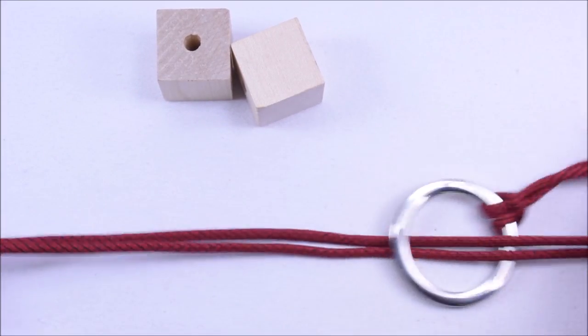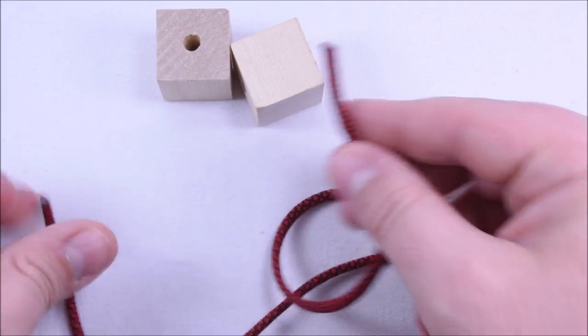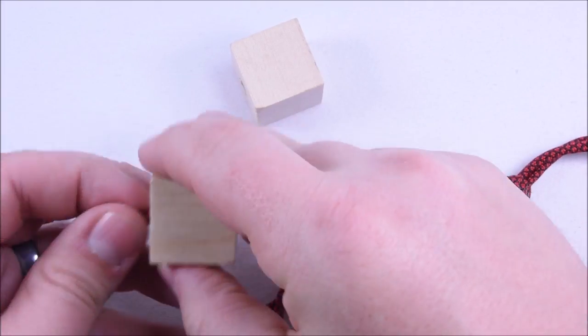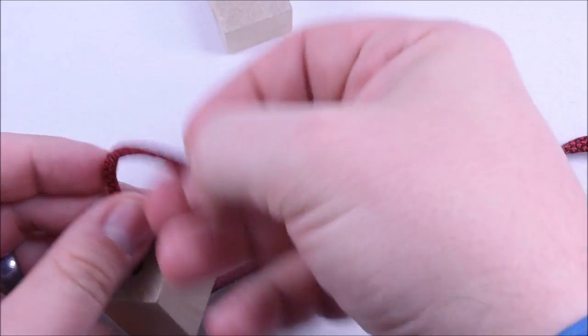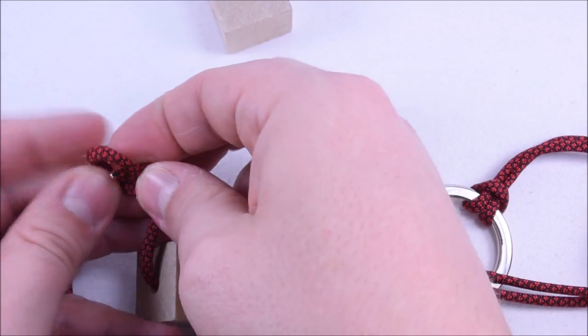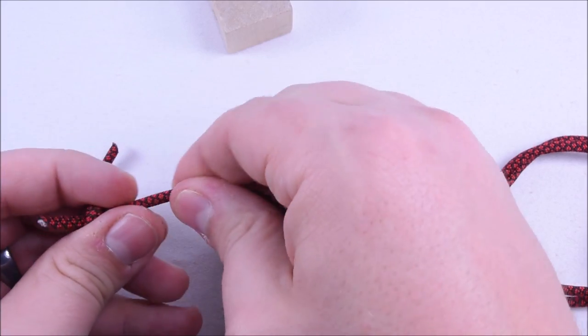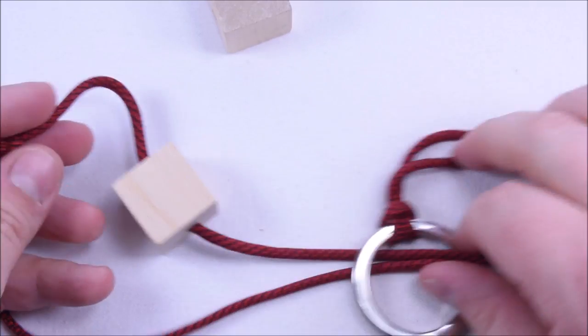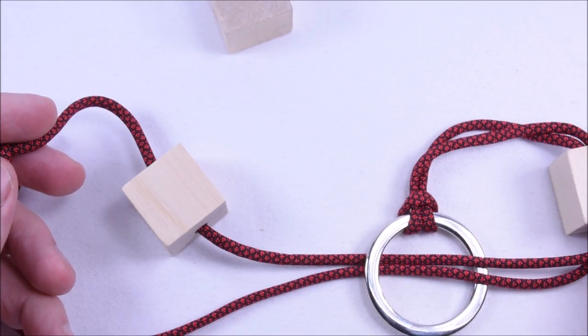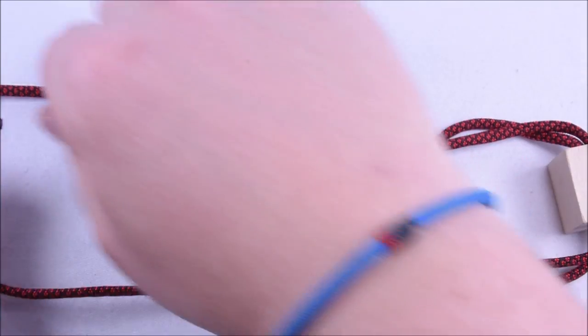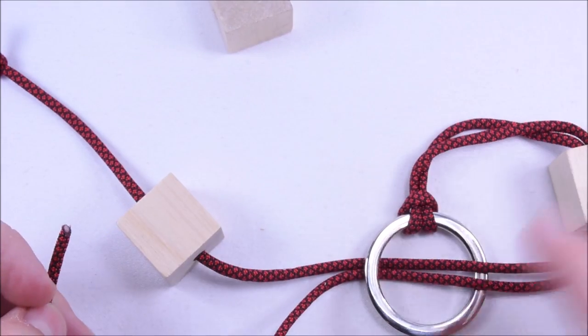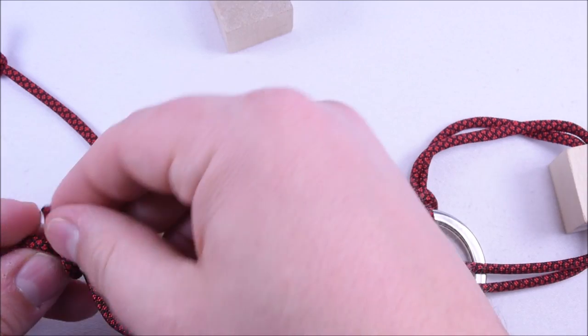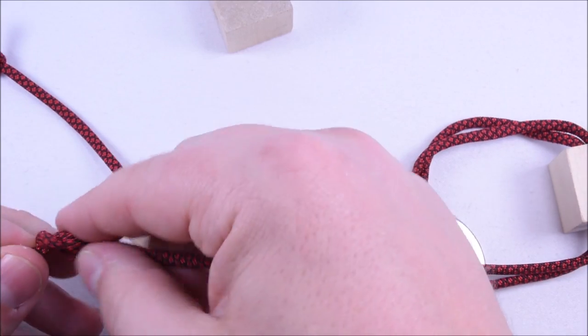These ends here are going to go through each block and we're just going to do an overhand knot in them. The reason for that is if for some reason you need to untie this to reset the puzzle, you can do that, because I have noticed that you can pretty easily get these cords tangled while you're trying to figure it out. This gives you an option to reset everything.